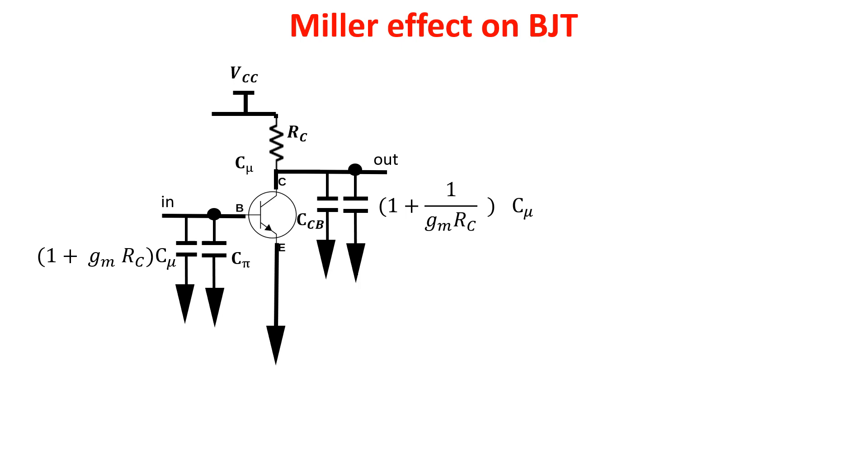Here we see all the capacitances in input and output applying the Miller approximation. The pole limiting the bandwidth at high frequency is given by these capacitances.